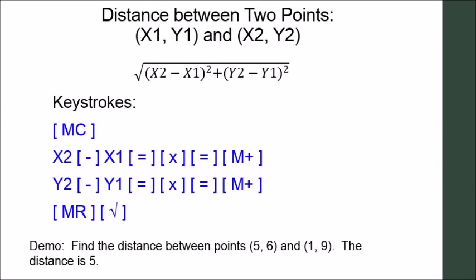Finding the distance between two points is pretty easy. The formula, the square root of the quantity of x2 minus x1 squared plus the quantity of y2 minus y1 squared can be accomplished by this algorithm. Memory clear, x2 minus x1 equals, times, equals, memory plus, y2 minus y1 equals, times, equals, memory plus, memory recall, square root.